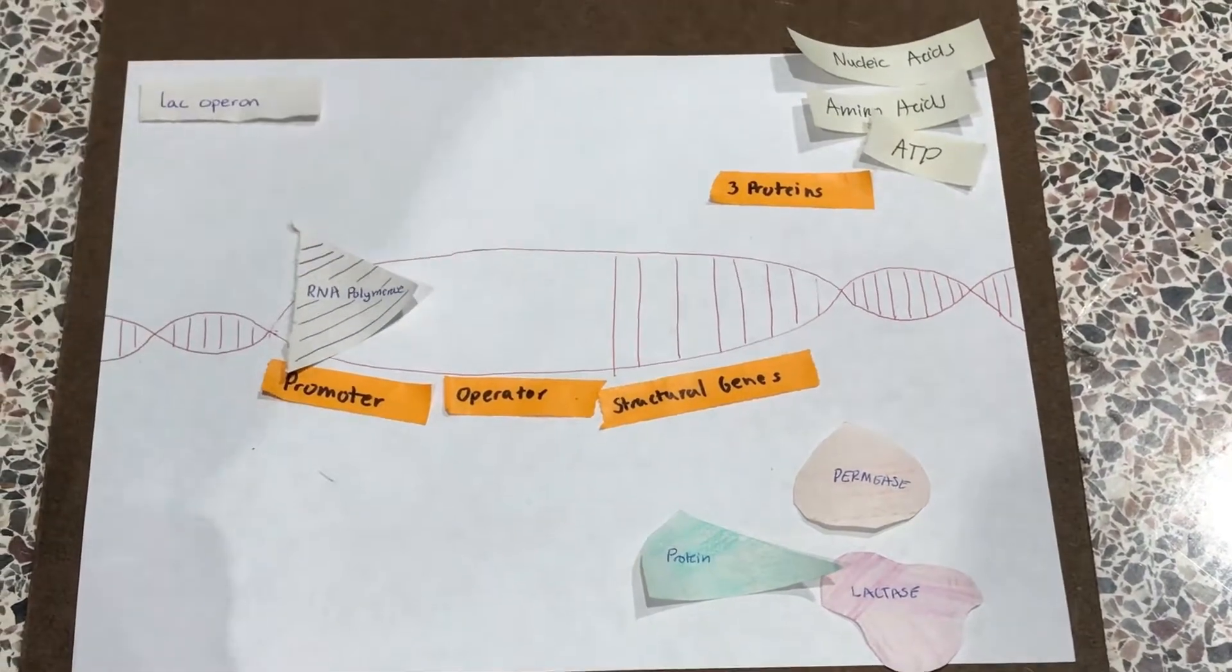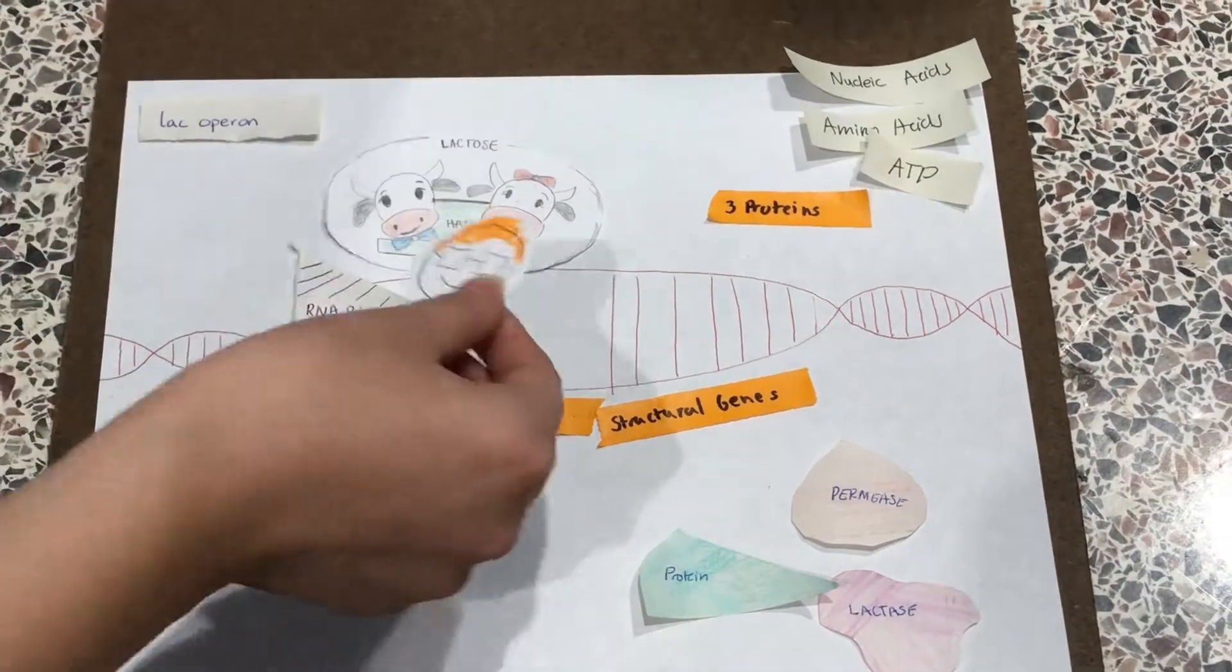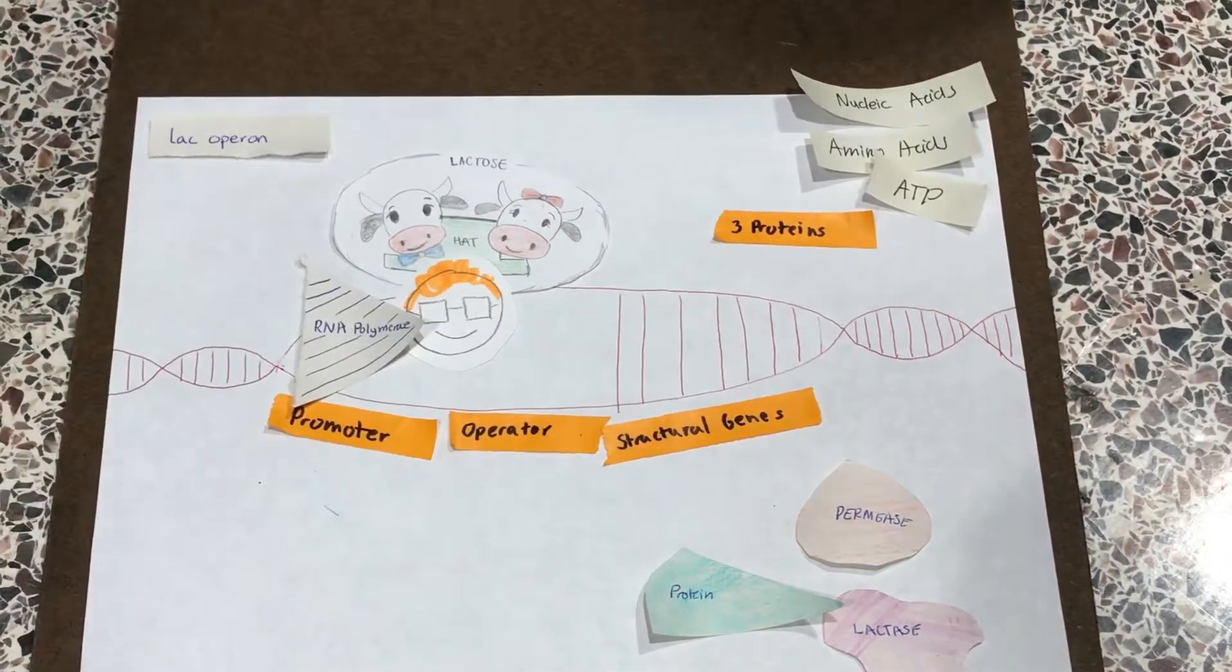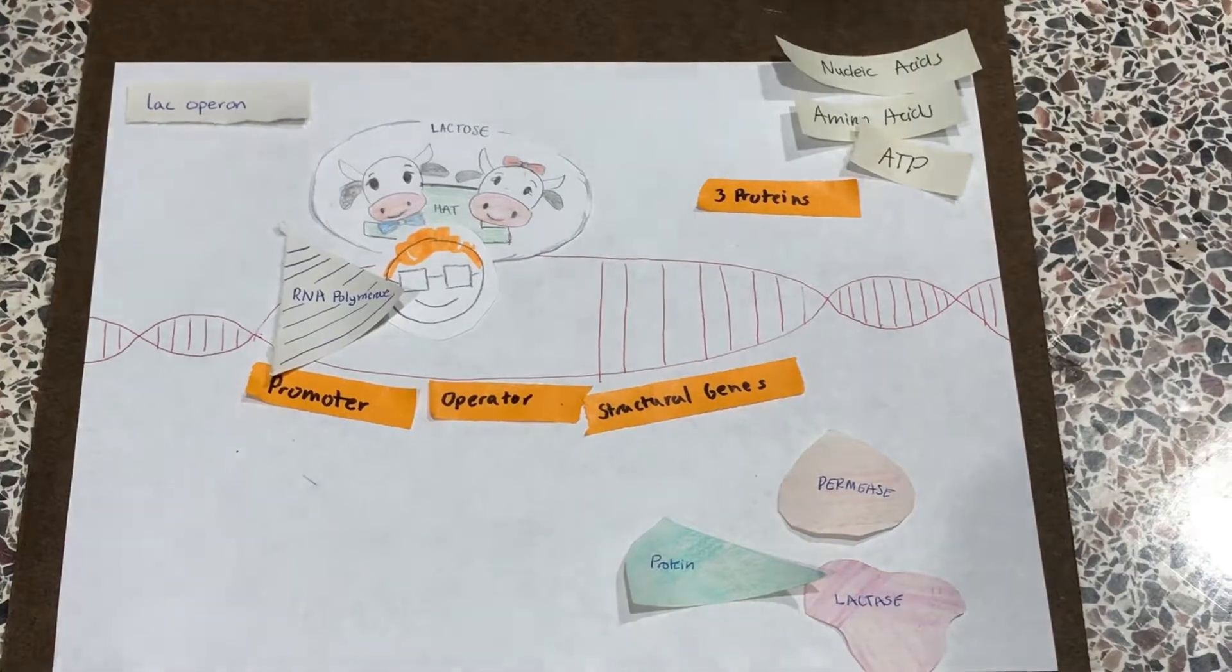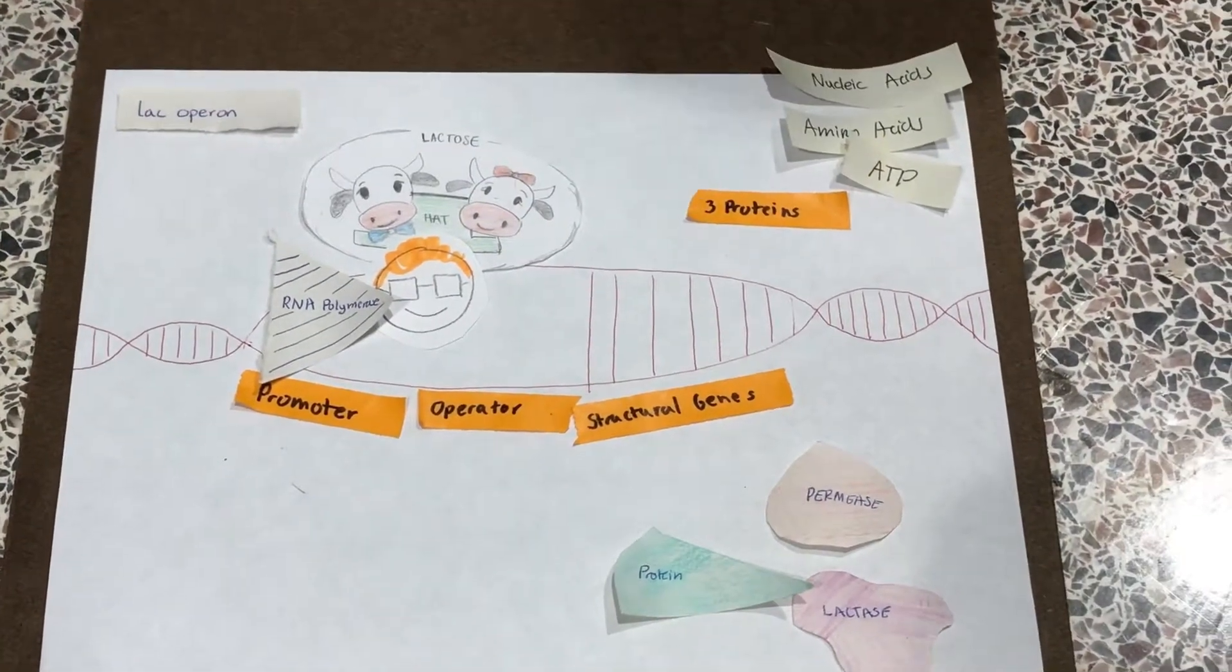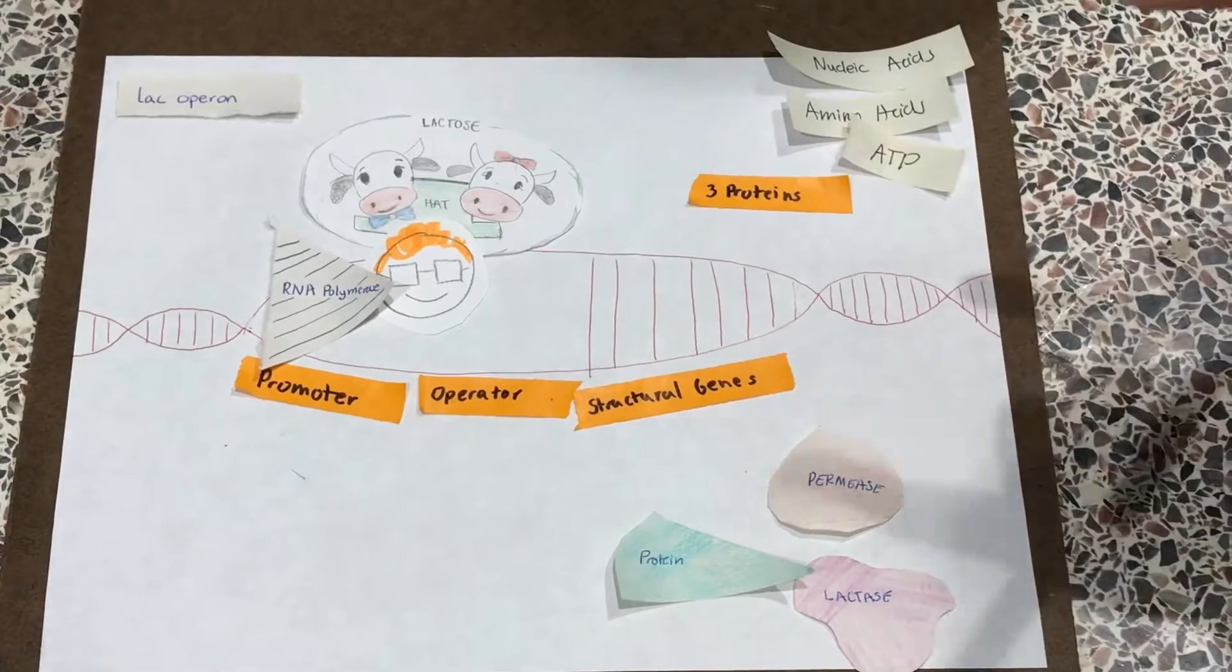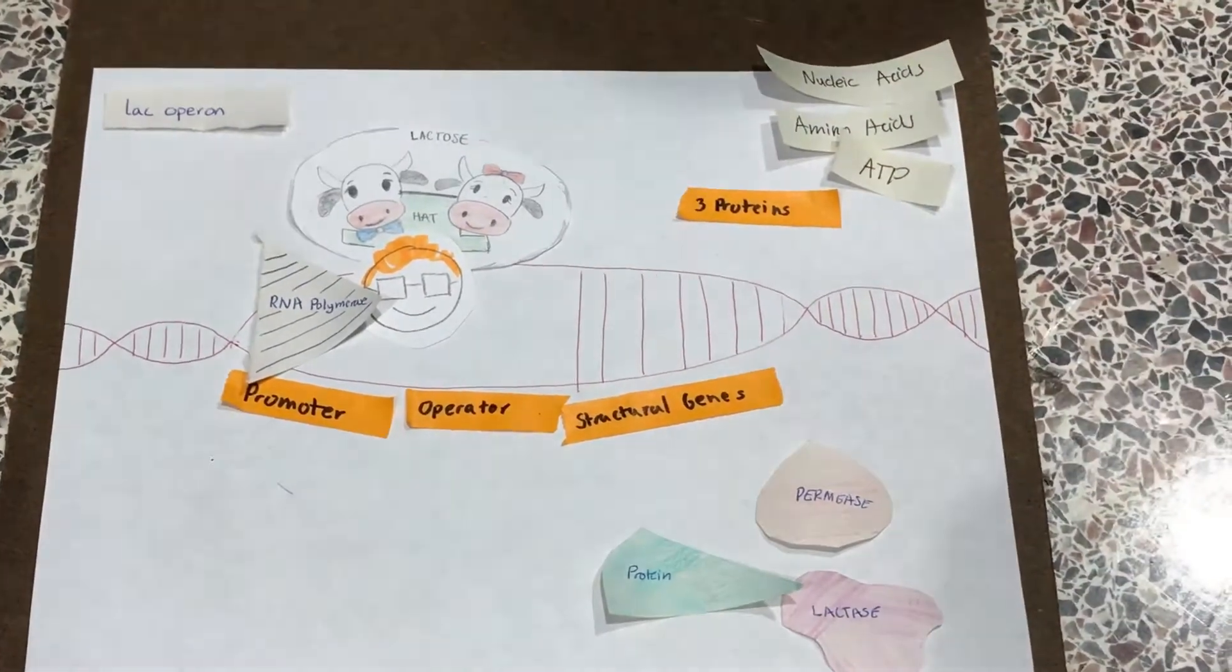So what happens when lactose is present? Basically, the active repressor gets inactivated because the lactose binds to the active repressor, causing RNA polymerase to be freed up and unblocked by the blocker.